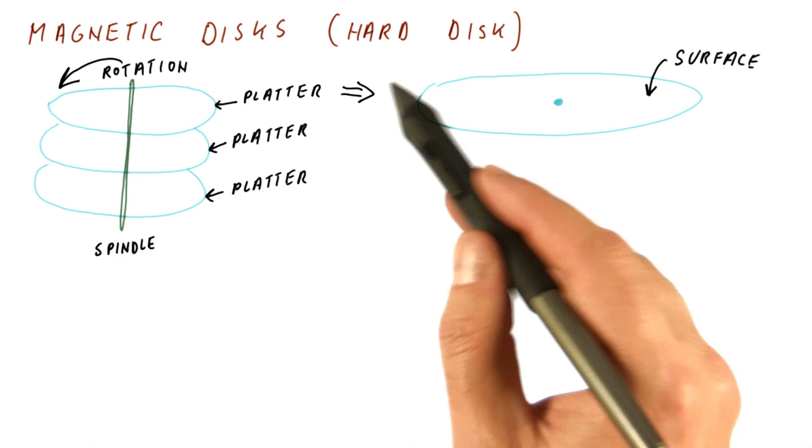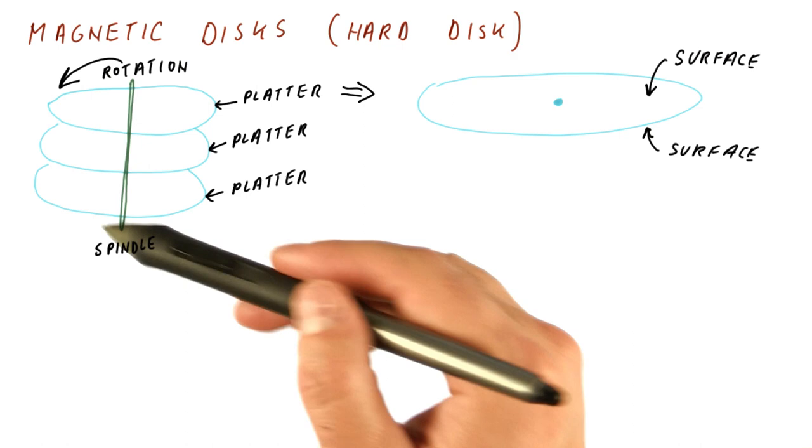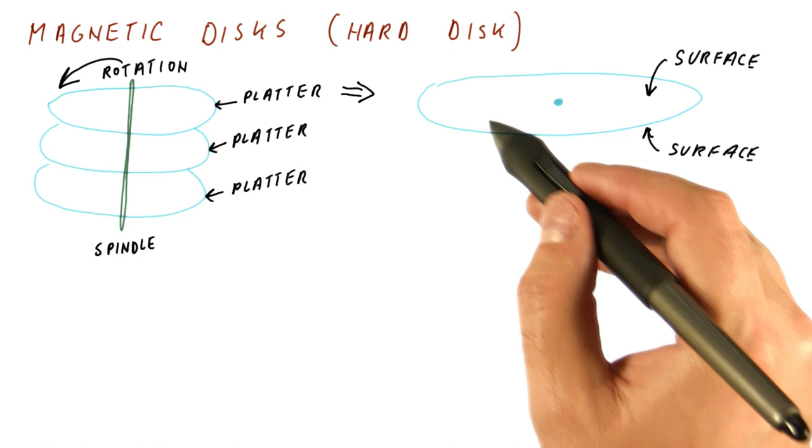If we look at a single platter, it has a surface covered with magnetic material on one side and also on another. So a disk drive that has three platters usually will have a total of six surfaces. The data bits are on all the surfaces.